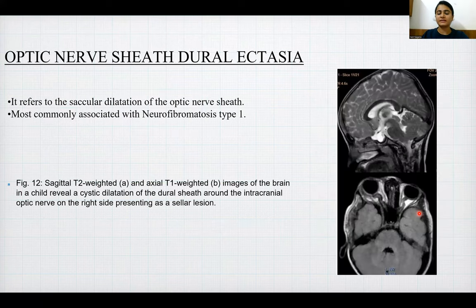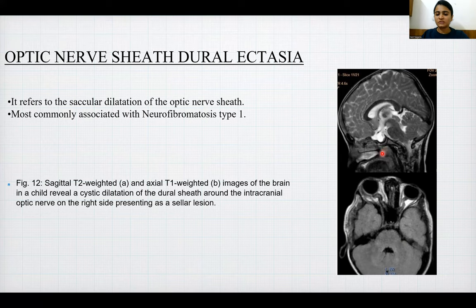Optic nerve sheath dural ectasia: this refers to saccular dilatation of the optic nerve sheath, most commonly associated with neurofibromatosis type 1. Sagittal T2-weighted and axial T1-weighted images of the brain of a child reveal cystic dilatation of the dural sheath around the intracranial optic nerve on the right side, presenting as a sellar lesion.